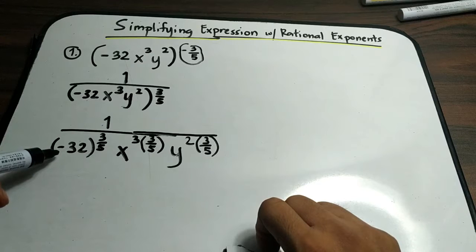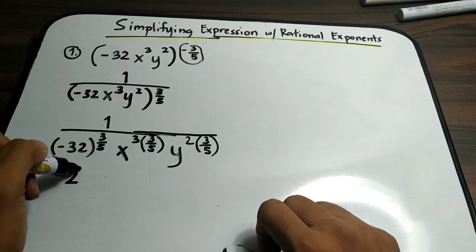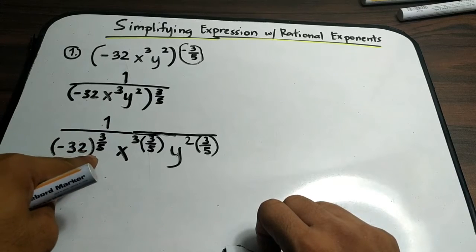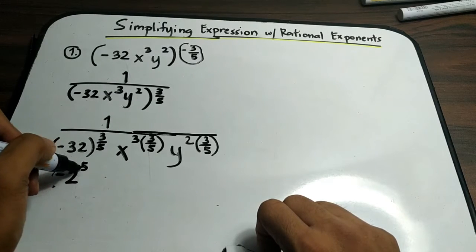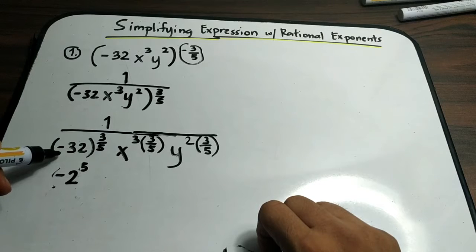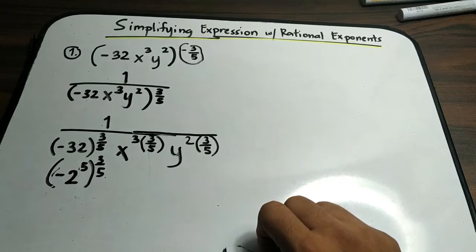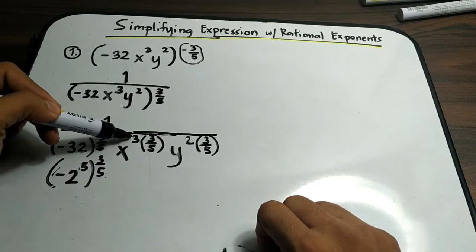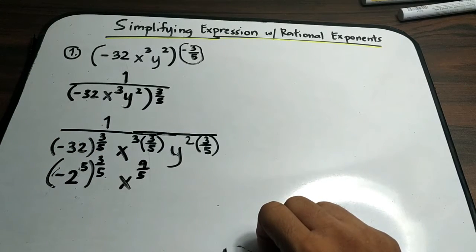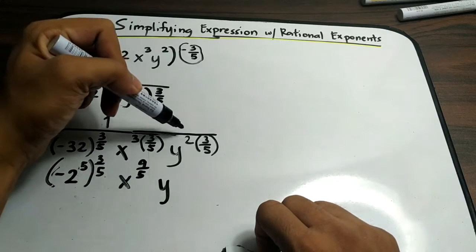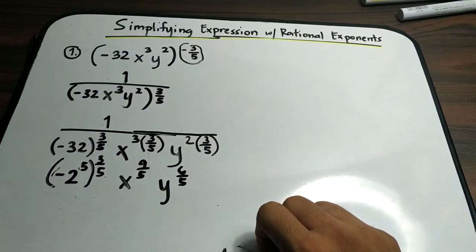For negative 32, we can express it as negative 2 raised to 5, because negative 2 raised to 5 equals negative 32. So we have negative 2 raised to 5, then raised to 3 over 5. For variable x, multiply the exponents: 3 times 3 equals 9, so x raised to 9 over 5. For variable y, we have y raised to 2 times 3, which is 6, all over 5 — so y raised to 6 over 5.